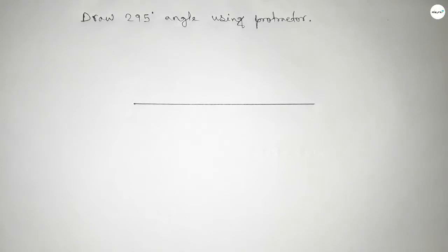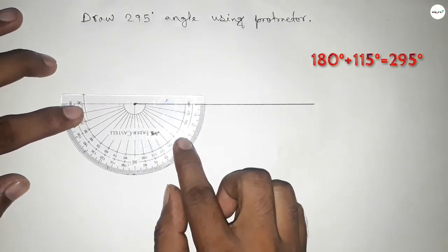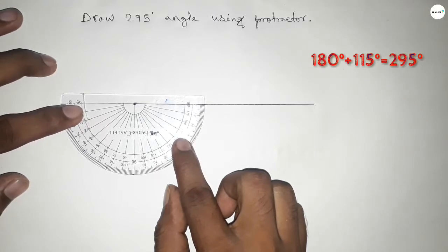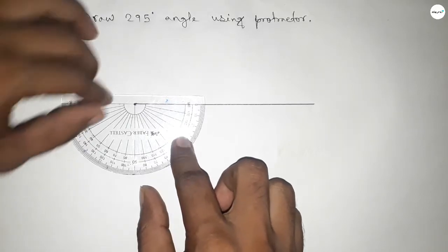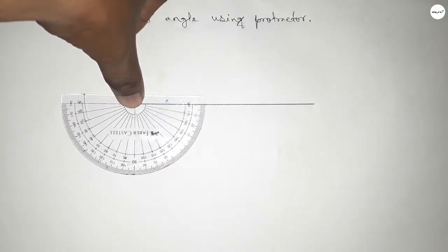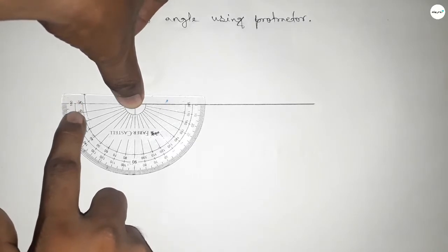So if you add 115 degree angle with 180 degree, then we can get 295 degree angle. So putting the protractor by this way on the line, now counting the angle. So this is 180 degree.